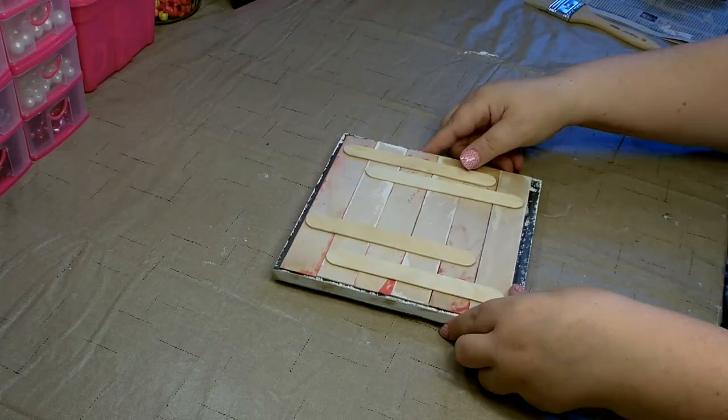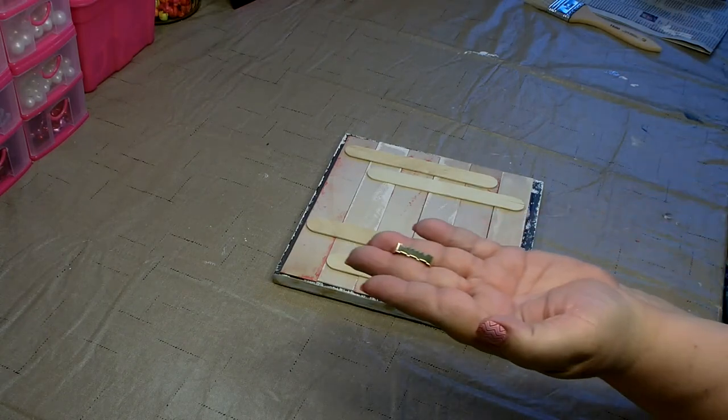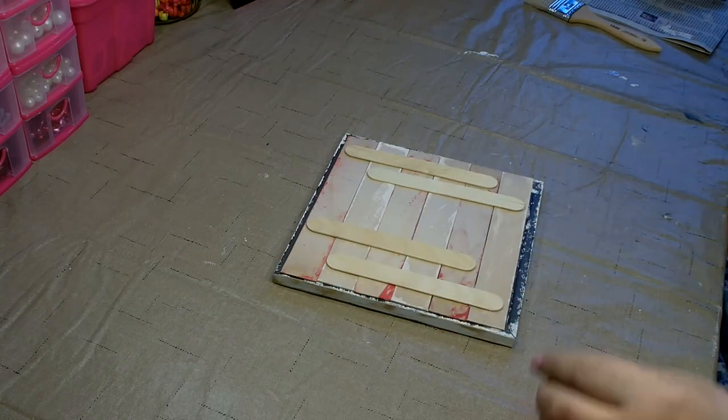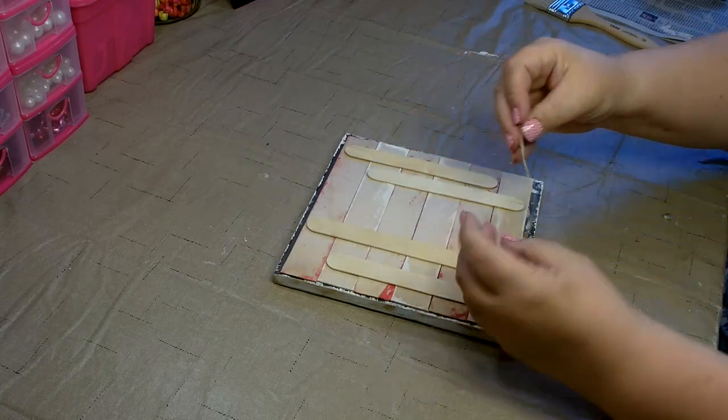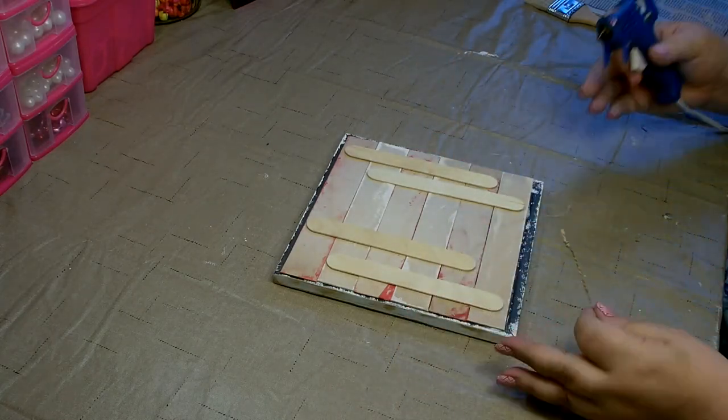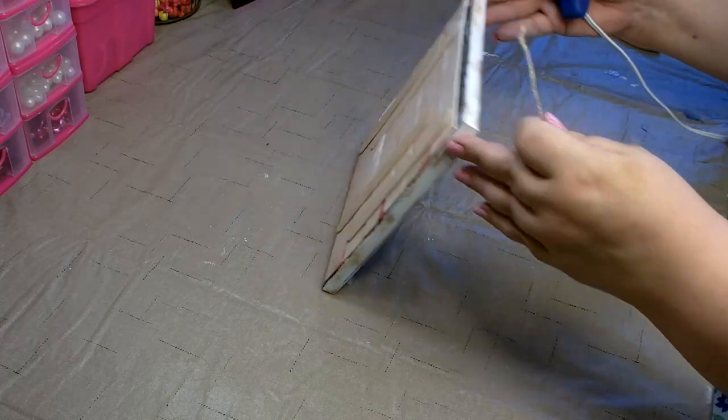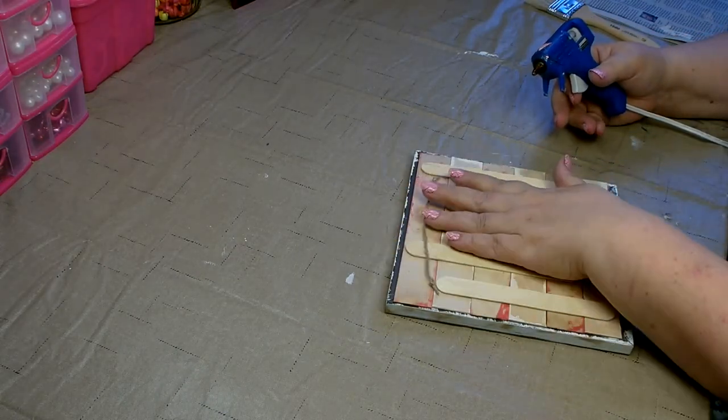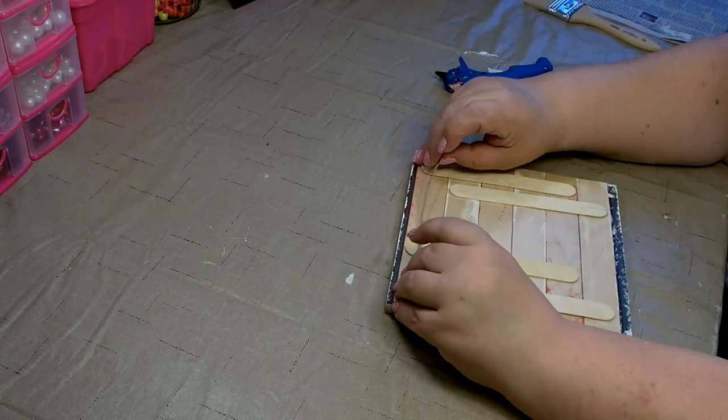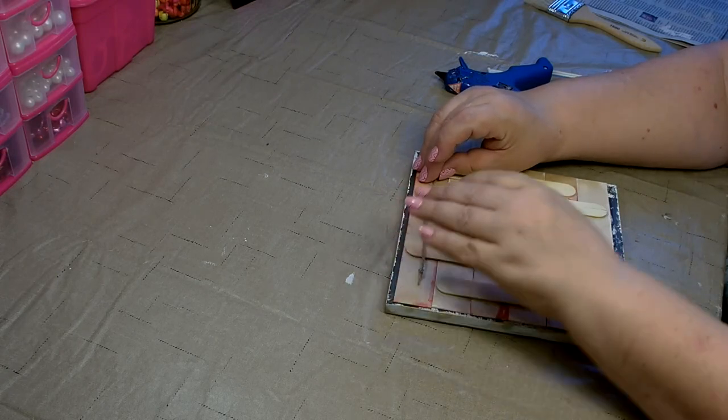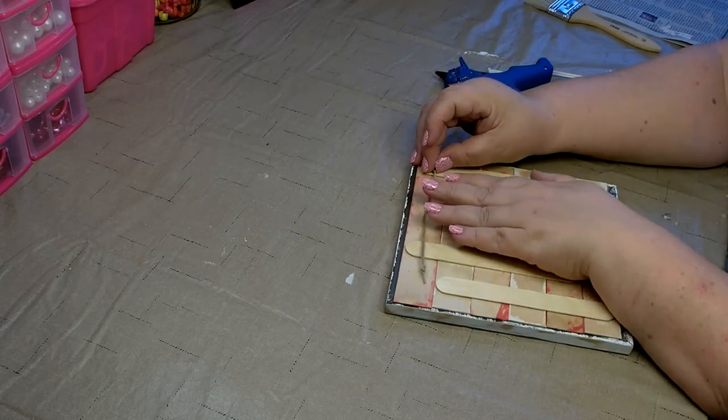If you would like to hang this patriotic artwork, you can do so by reattaching the hanger that came with the frame or you can use some jute cord. To attach the jute cord, I simply cut a piece larger than I need, tie a knot on each end, and then hot glue it to the backing.